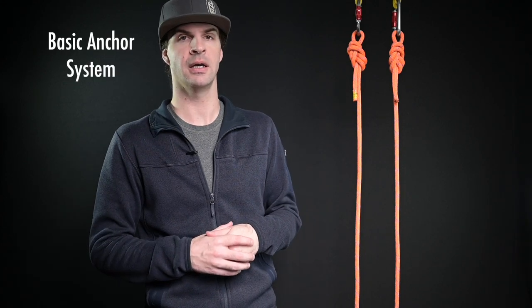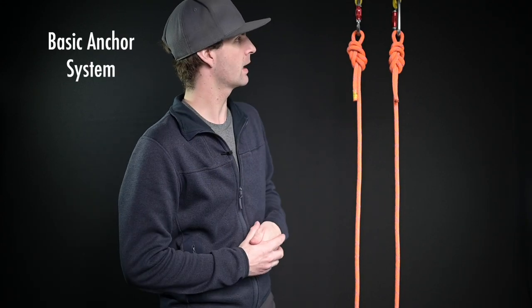Alright so next up is the basic anchor. This is what a basic anchor looks like. It's very simplistic. We have two ropes, two knots, two carabiners, and two slings. Keep in mind that these slings could be changed out with bolts or some other form of anchorage. Alright so let's talk about how we come up with this.